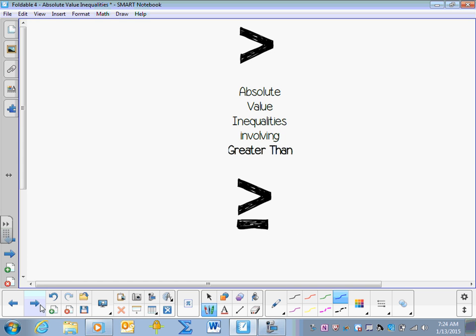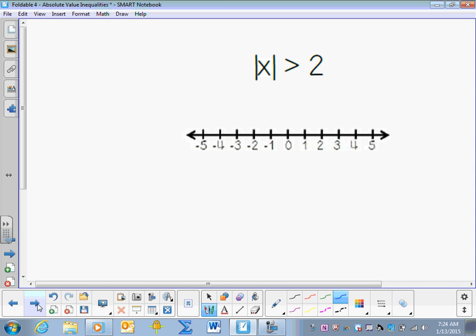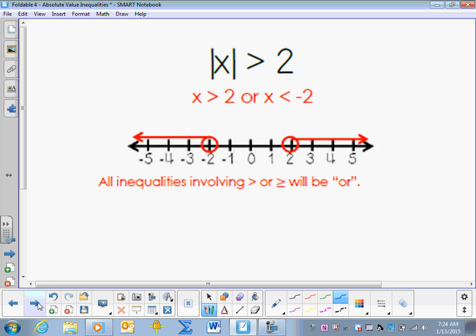Now we'll look at solving absolute value inequalities involving greater than. Absolute value of x is greater than 2. Since it's a greater than sign, it becomes an OR statement. X is greater than 2 or x is less than negative 2. All inequalities involving greater than or greater than or equal to will be OR statements.